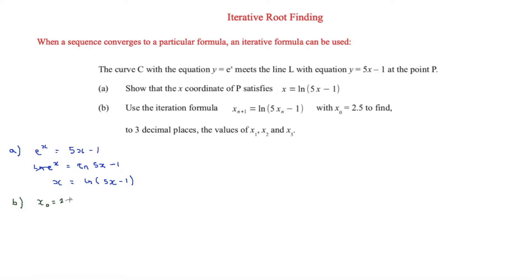We need to find to three decimal places the values of x₁, x₂, and x₃. For x₁, put 2.5 into the calculator and press Ans. Then type ln(5 × Ans - 1), which is ln(5 × 2.5 - 1). This gives x₁ = 2.442.